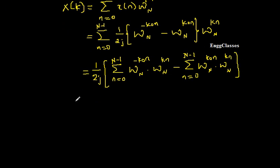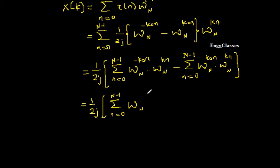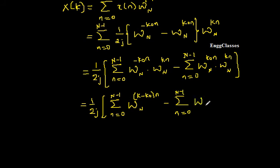Moving forward: (1/2j) times the first summation from n=0 to N−1 of W_N^((k−k₀)·n), minus the summation from n=0 to N−1 of W_N^((k+k₀)·n).